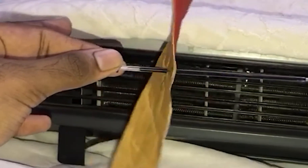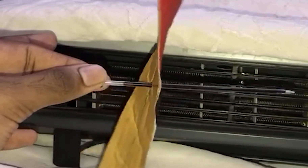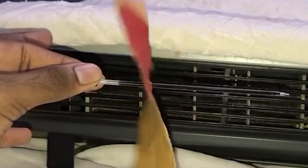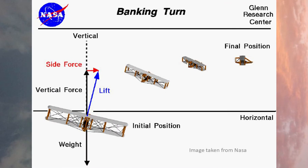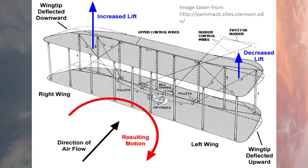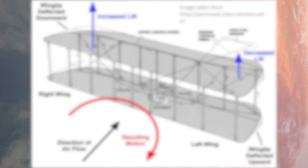This causes greater lift in the wing with a higher angle of attack, generating a torque about the center of gravity causing it to roll. As the direction of the lift force is always perpendicular to the surface, a component of it acts in the horizontal direction, causing the plane to bank into a turn. However, the greater angle of attack also produced more drag, causing the plane to yaw in the direction of the wing with greater lift — this is called adverse yaw.